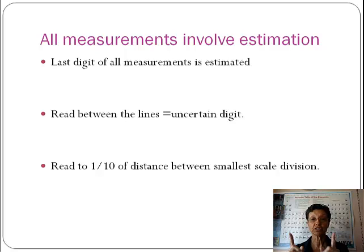In your mind, you're going to divide that section in tens, in ten parts, and say this is the number that I estimated it to be. That is what your uncertain digit will be.